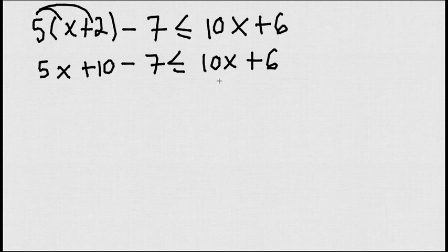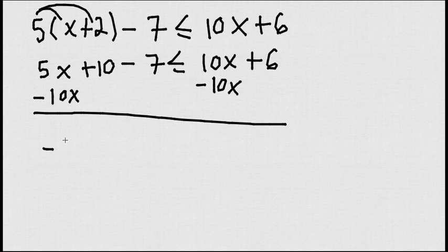The second step is to move all the x's to the left and all the numbers to the right. Well, look at this 10x. I'm going to do minus 10x minus 10x. And you should do this step by step. 5x minus 10x is going to be negative 5x plus 10 minus 7. I'm just rewriting, and this is lesser equals than 6.